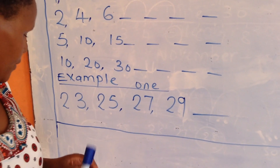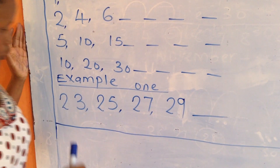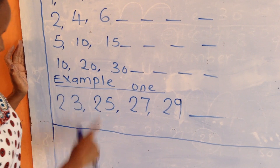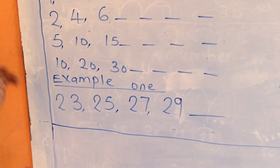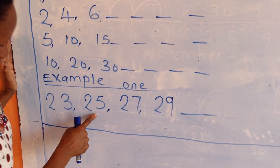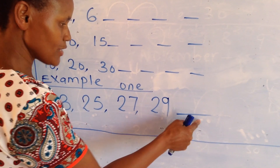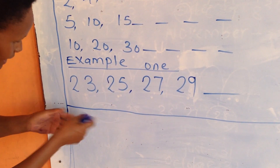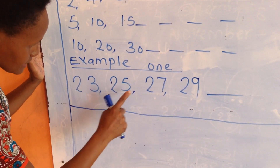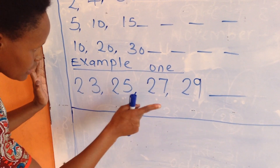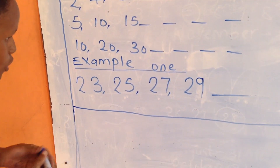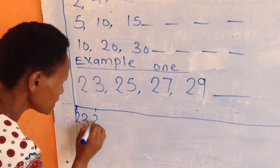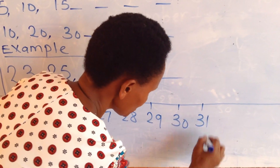Learner, in my first example we are going to do number pattern, but we are going to look at the numbers that I've given you. We are going to do number pattern using a number line. My first numbers are 23, 25, 27, 29. We want to find the next number using the number line. You are going to look at your numbers and see the smallest number. The smallest number here is 23, so my number line is going to start from number 23 up to 31.